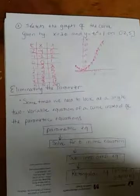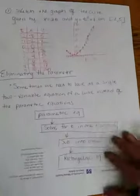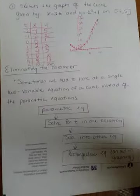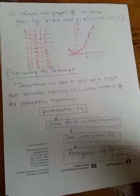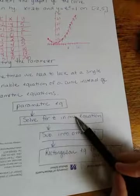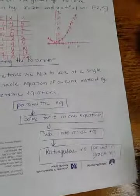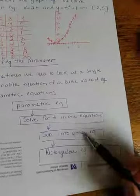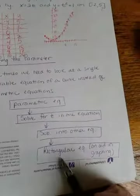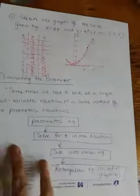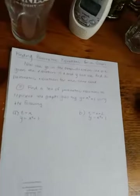Okay. Two other topics that you'll see on your homework tonight. The second one is eliminating the parameter. So, sometimes we need to look at a single two variable equation of a curve instead of the actual parametric equations. So, here are some steps that I outlined for you.